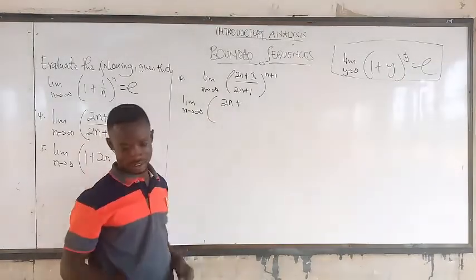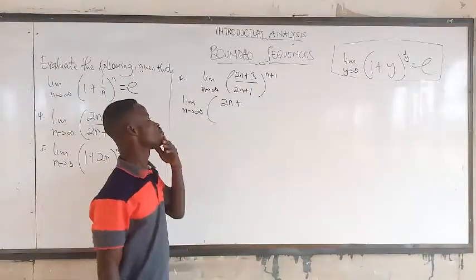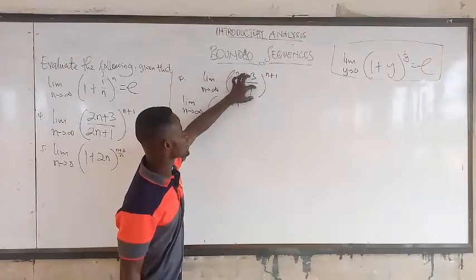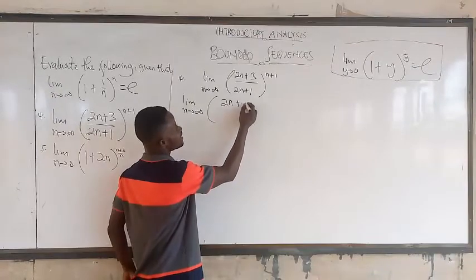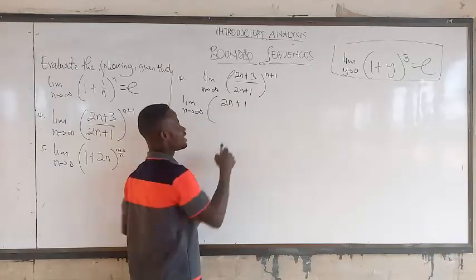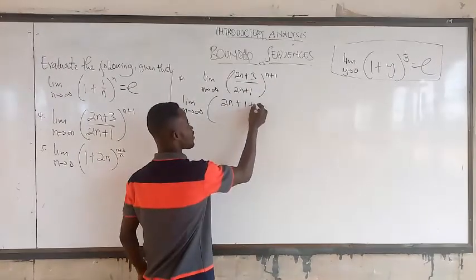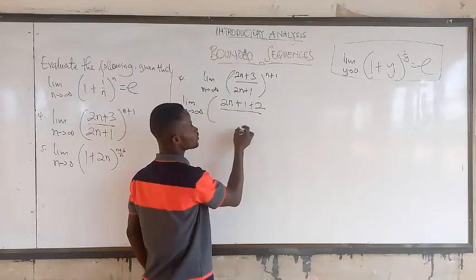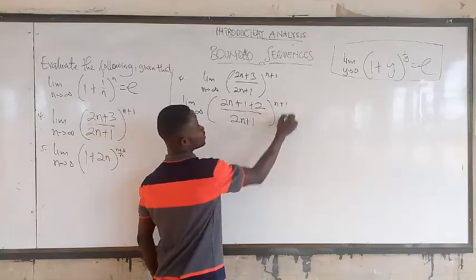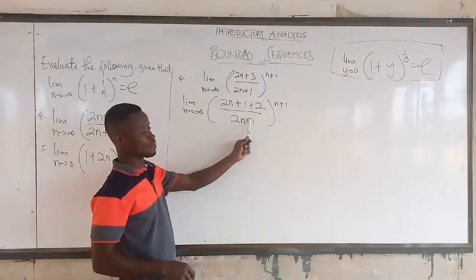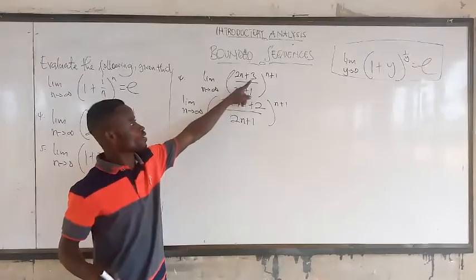You know that the numerator here is 2n plus something, right? But I want to get the same as what is in the denominator here. So I write the same one here, but that means that I have taken 1 from the 3. So the numerator is what? 2. All this over 2n plus 1.